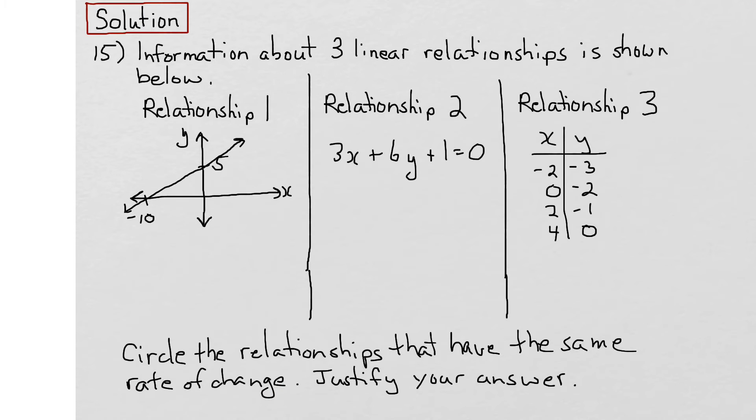In linear relationships, slope is a measure of rate of change. So if we can find the slope of each of these and compare them, we can see which ones are the same.